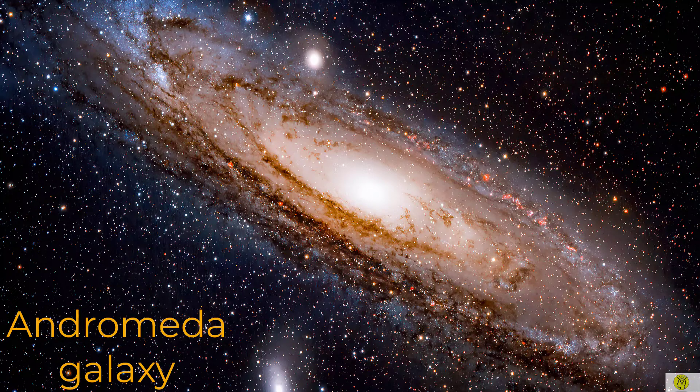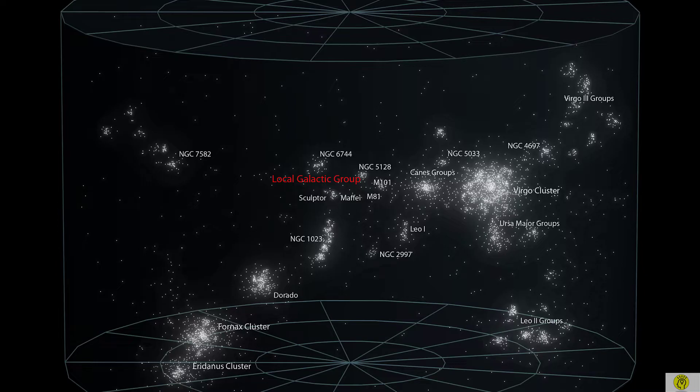Next if we explore outside local group, we can observe more surrounding galactic clusters. As you can see here, local group including Milky Way belongs to Virgo Super Cluster. There are massive galactic clusters other than local group in a super cluster.